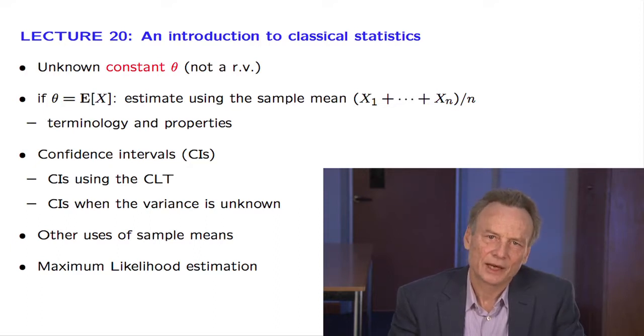We can still carry out estimation without assuming a prior for the unknown quantity. For example, if the unknown theta is the mean of a certain distribution, we can generate many samples from that distribution and form the sample mean. The weak law of large numbers then tells us that this estimate will approach, in the limit as n increases, the true value of theta.